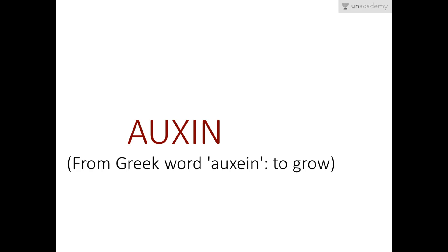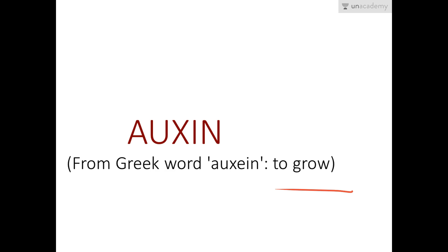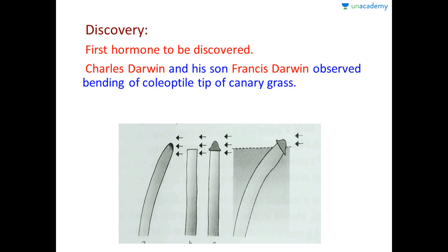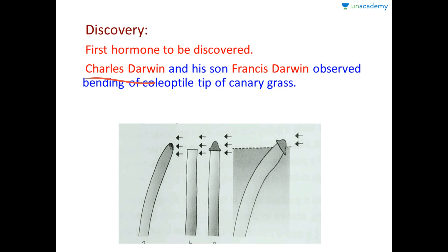Now we will start with our first PGR — auxin — which we will primarily focus on in this lesson. It comes from the Greek word meaning 'to grow.' Auxin was the first hormone to be discovered, which is a very important point. It was discovered by Charles Darwin and his son Francis Darwin, who observed this in the bending of the coleoptile tip of the canary grass.